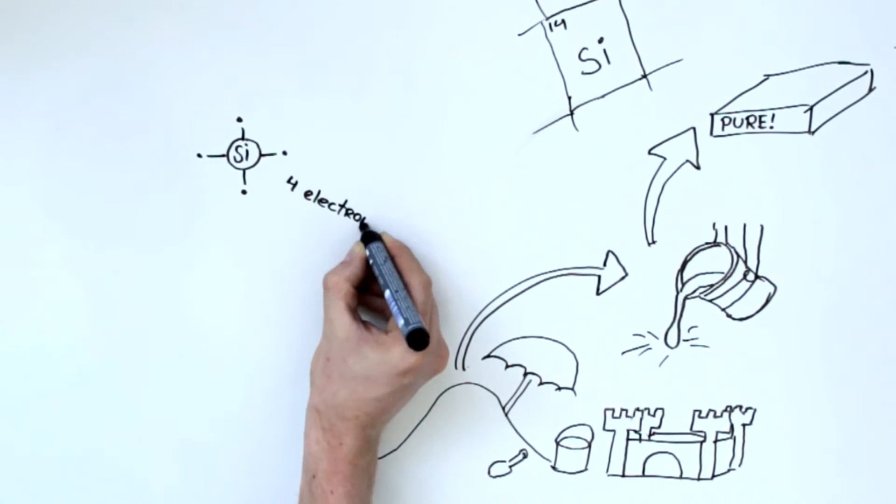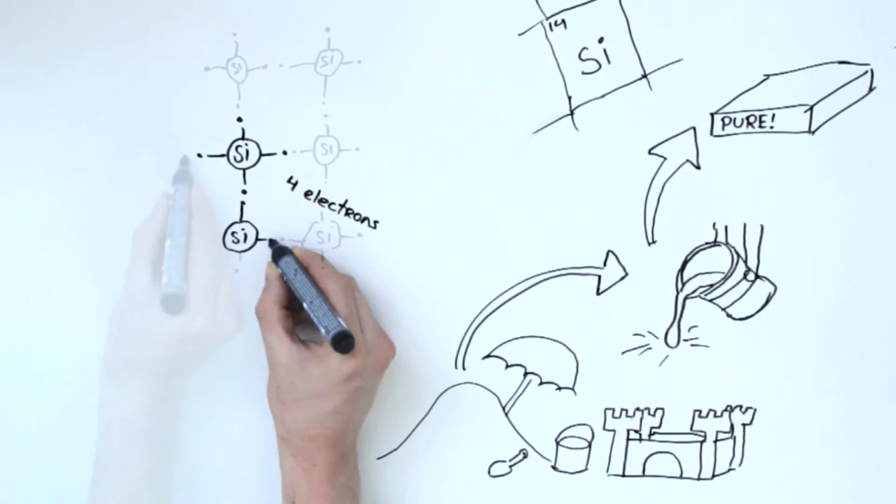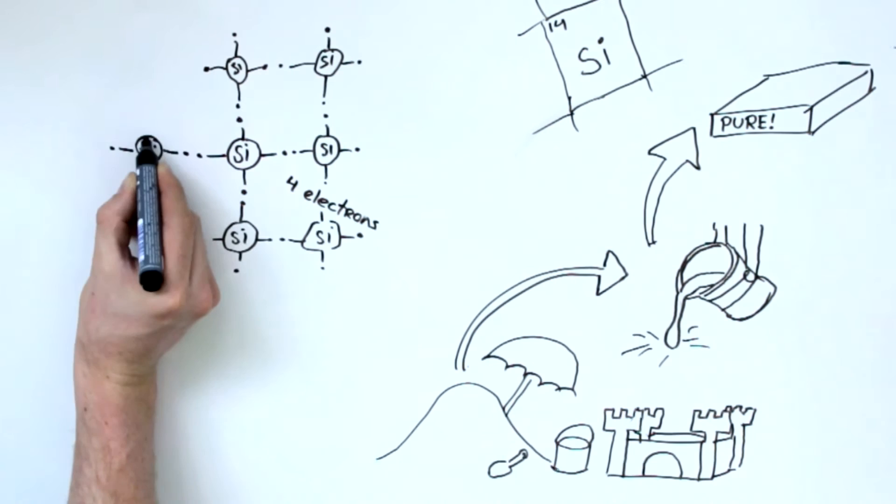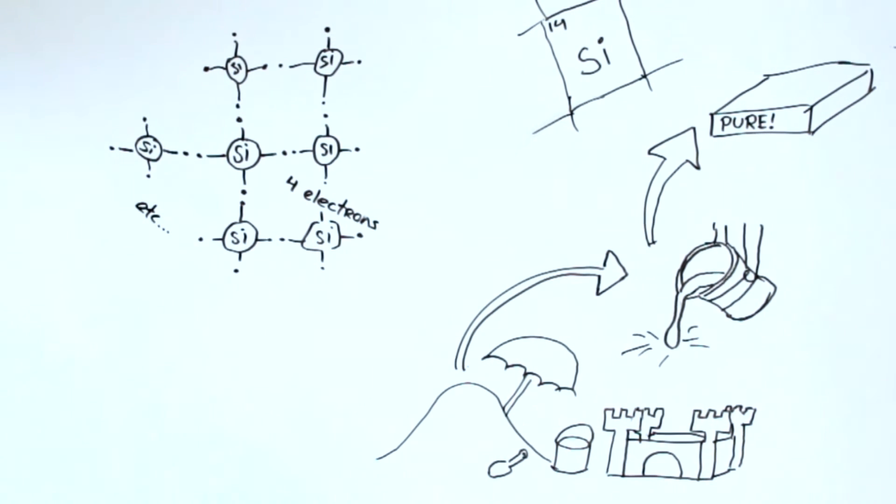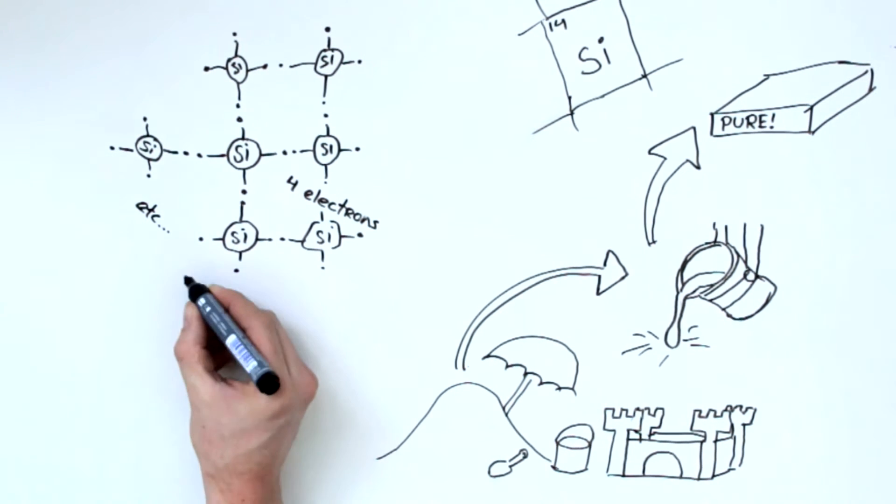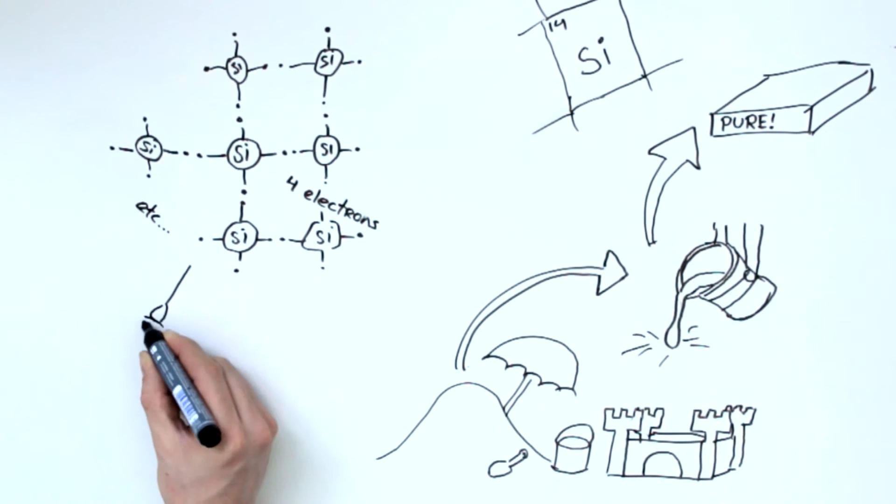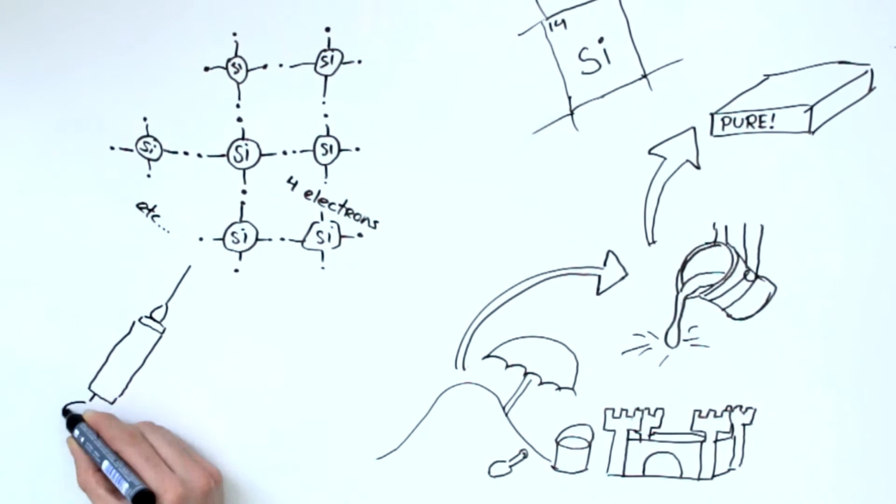This is because silicon has four electrons and in the crystal structure all the electrons are connected to other electrons. Since we want to create electricity from sunlight we need to do something about this. We have to make the silicon more conductive.